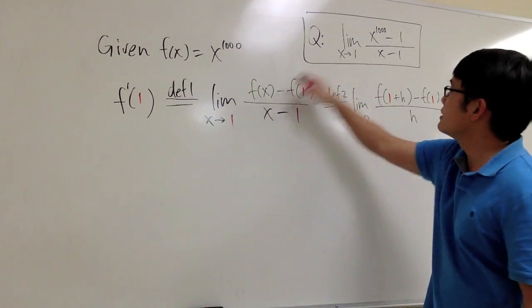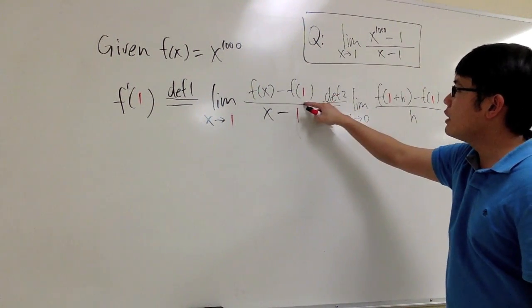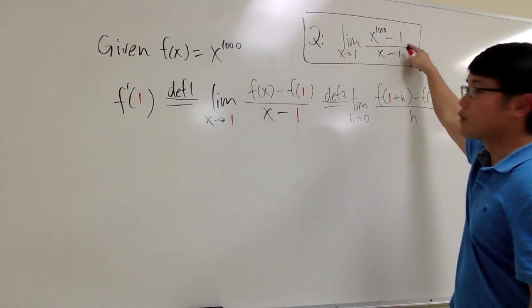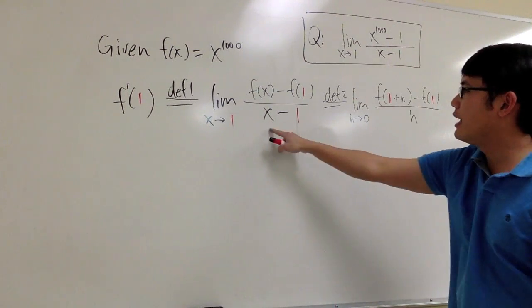You see, f of x is x to the 1000 power, 1 to the 1000 power, you also get 1, and divide it by x minus 1.